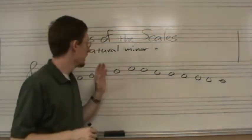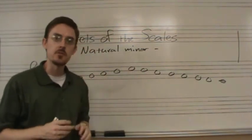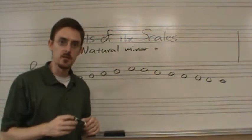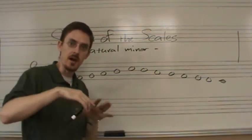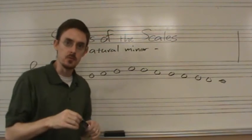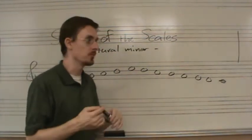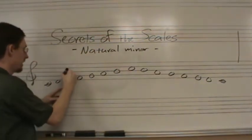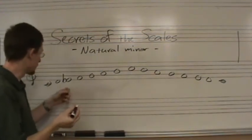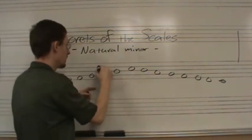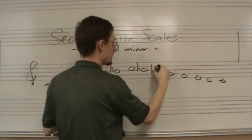The natural minor scale is similar in some ways to the major scale in that it has particular tendency tones that drive the melody in certain directions. What makes the natural minor scale distinct is that it has a lowered third scale degree, a lowered sixth scale degree, and a lowered seventh scale degree — both ascending and descending — compared with the major scale.